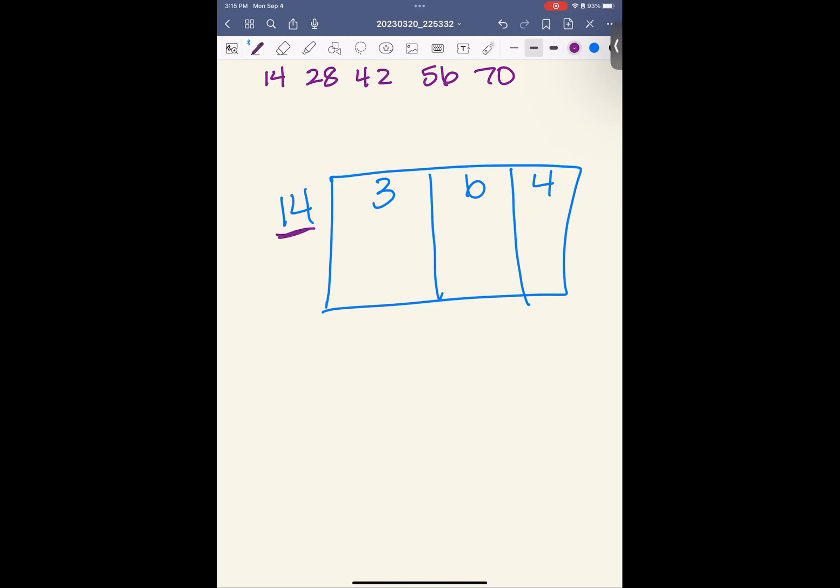All right, taking groups of 14. How many groups of 14 can I take out of 3? 0. Because 0 times 14 is 0. Subtract. 3 minus 0 is 3. 3 is less than 14. That's great. Bring it with you. How many groups of 14 can I take out of 36? It's going to be 2. Because 2 times 14 is 28. When I subtract this, I'm left with 8. 8 is less than 14. That's great. Bring it with you.